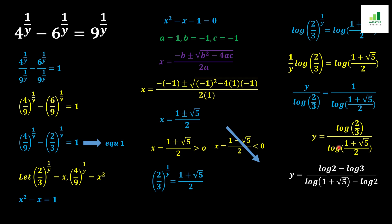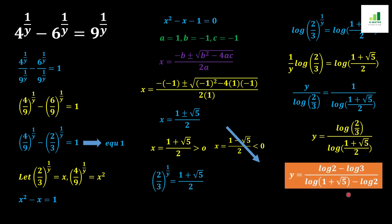Multiplying through, we get y equals log(2 over 3) over log((1 plus square root of 5) over 2). Applying the log quotient property, log(2 over 3) becomes log 2 minus log 3, and log((1 plus square root of 5) over 2) becomes log(1 plus square root of 5) minus log 2. This is our required answer — the value of y for this question. We could evaluate it numerically with a calculator, but this closed form is sufficient.